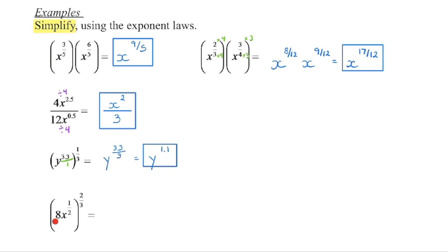In this next example we have eight times x to the power of one-half, all raised to the power of two-thirds. Because this exponent is outside of the brackets, it gets applied to everything in the brackets, including that eight — so don't forget to do that.